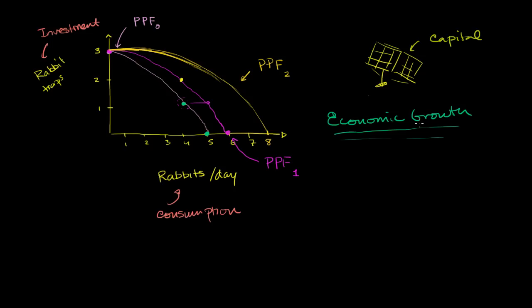There are multiple types of investments, which we'll discuss in future videos. In this case, he is doing capital accumulation — building tools that make him more productive. Another type of investment is technological change or technological improvement, which would make his tools even better. We could draw another PPF between making rabbit traps and doing R&D on inventing new types of traps. The key takeaway is that the production possibilities frontier can change — you can become more productive through investment in R&D or capital accumulation, which in this case happened to be rabbit traps.